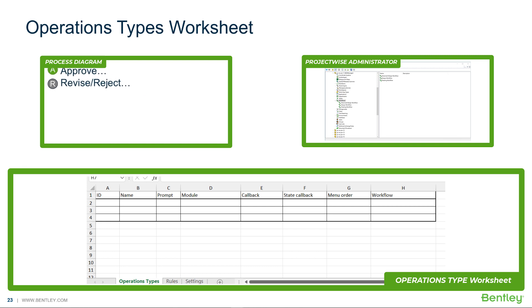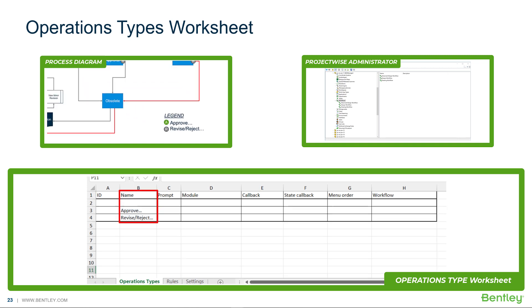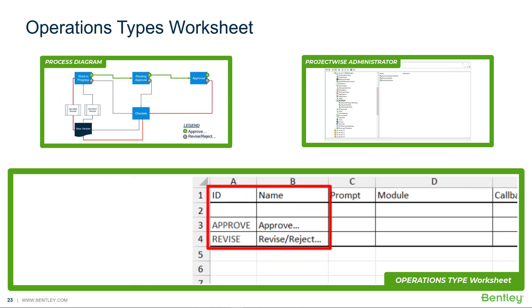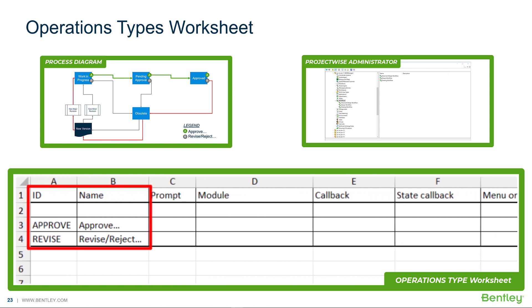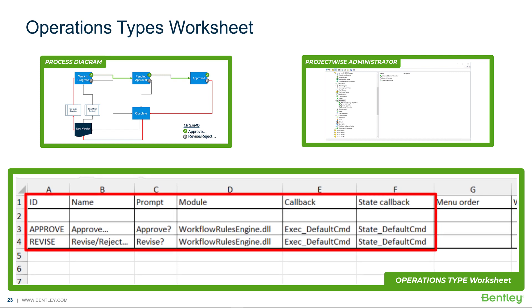Based on the process diagram legend, we start by filling in menu labels. Next, we pick IDs for each menu option. We will use these later in the rules worksheet. For each operation type, we then populate the prompt, module, callback, and state callback columns. Finally, we order our menu items using the menu order column.